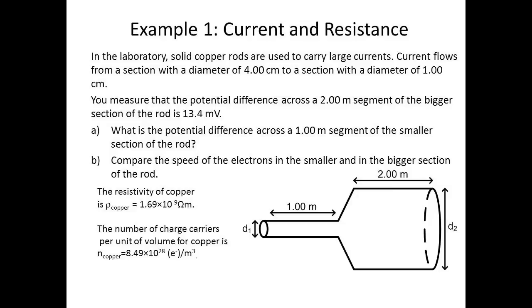Here's an example of a problem with current and resistance. In a laboratory, solid copper rods are used to carry large currents. Current flows from a section with a diameter of 4 cm to a section with a diameter of 1 cm.